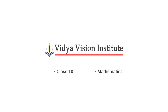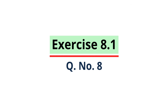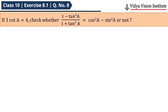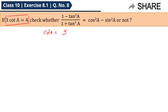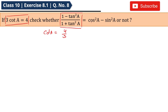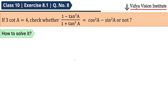Solve Class 10th Exercise 8.1, Question 8. The question is: if 3·cot A = 4, check whether (1 - tan²A)/(1 + tan²A) is equal to cos²A - sin²A or not.